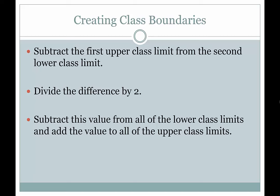You're going to subtract the first upper class limit from the second lower class limit. I'll show you what that looks like. It's very easy. Then divide the difference by two, and then you're going to use that result as the number that helps you generate all the class boundaries you need. Then you do that by subtracting that value from all the lower class limits you had and adding that same value to all the upper class limits, and that will get it done.